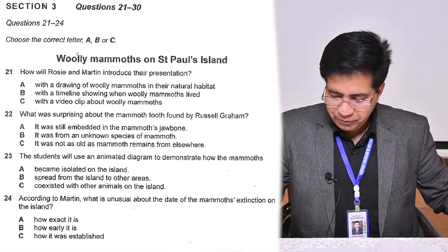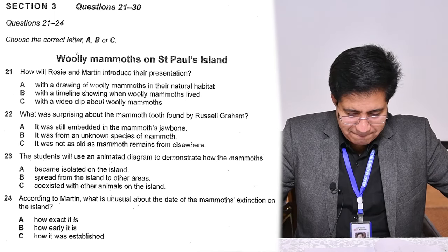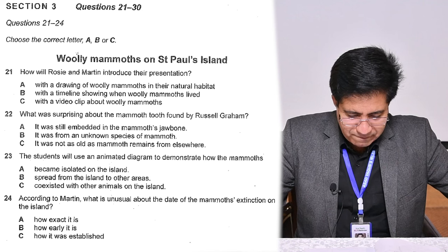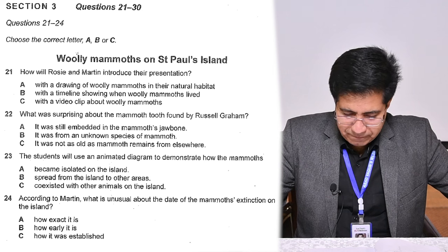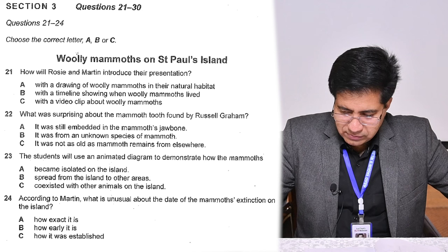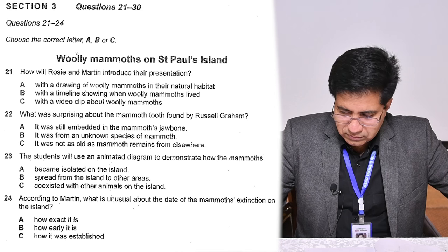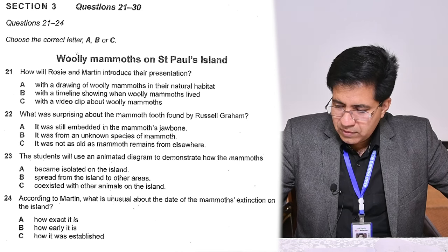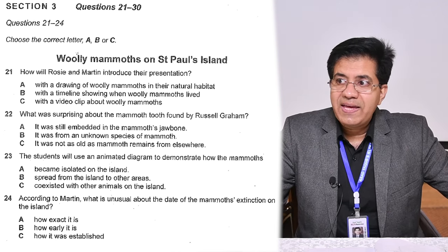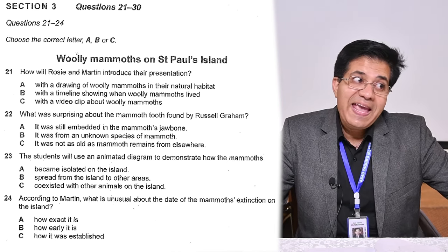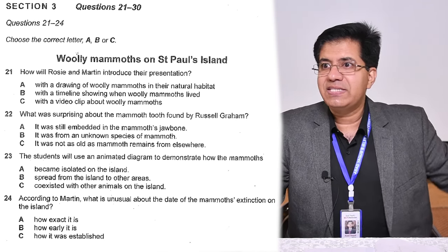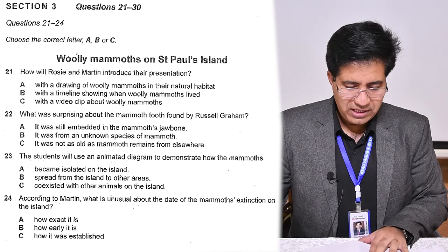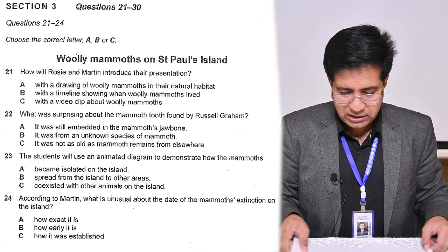The water levels went up and the mammoths became isolated on the island — so question 23 answer is A. For question 24: they'd become extinct on the mainland. Graham's team identified the extinction date on the island as 5,600 years ago — which is a very precise time for a prehistoric extinction. Exact and precise — so the answer is A, exact precise time.